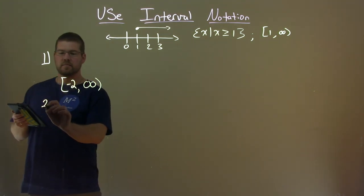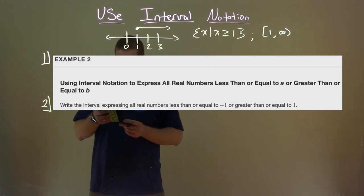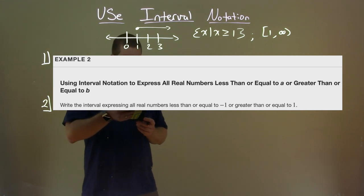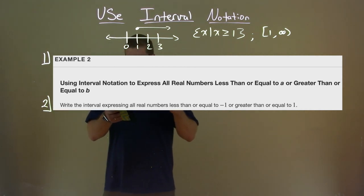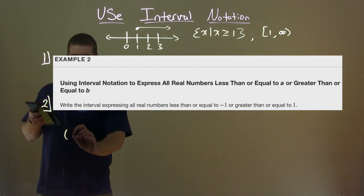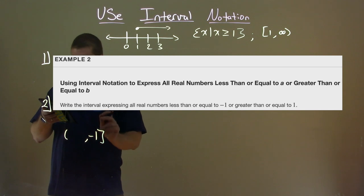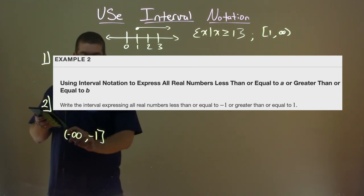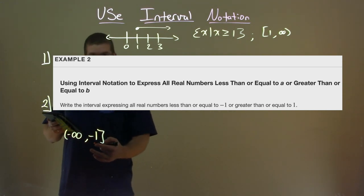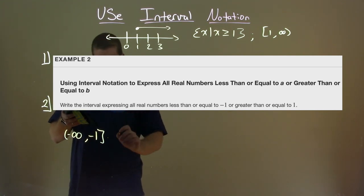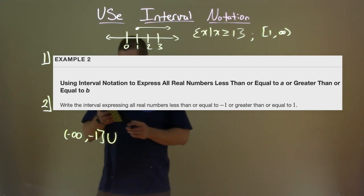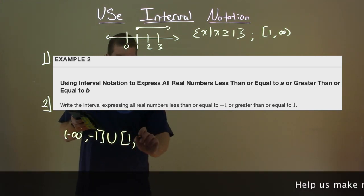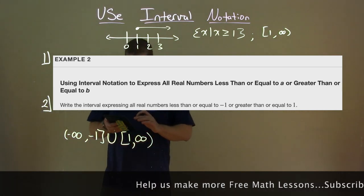Example 2: write the interval expressing all real numbers less than or equal to negative 1 or greater than or equal to 1. We're looking for numbers less than or equal to negative 1 or greater than or equal to positive 1. We start with negative 1 and put a bracket there because it can equal negative 1. Since all real numbers less than or equal to negative 1, we have negative infinity leading up to negative 1 — that equal to makes it a bracket. Then they give us the second condition, so that's where we put a union, and then greater than or equal to 1: we can equal positive 1 with a bracket, and it can be greater than that showing positive infinity with a parenthesis. And now we have our interval notation.